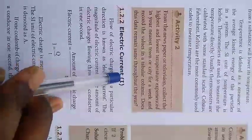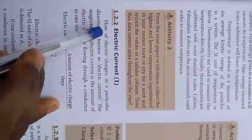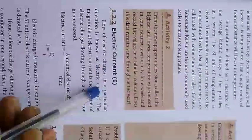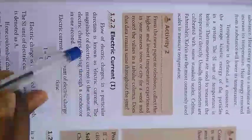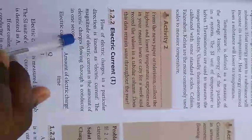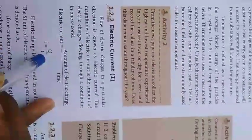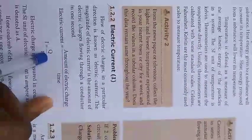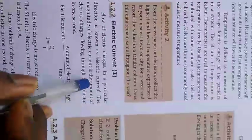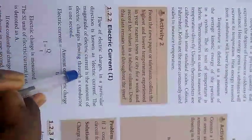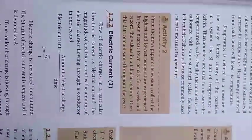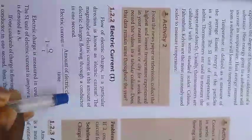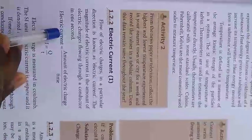Electric current, with symbol capital I, is the flow of electric charges in a particular direction. The magnitude of electric current is the amount of electric charge flowing through a conductor in one second. Conductors include aluminum wire and copper wire.